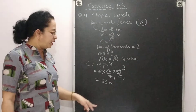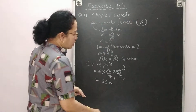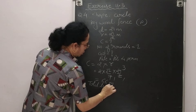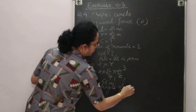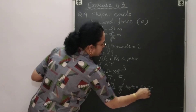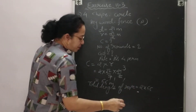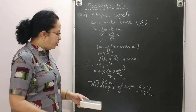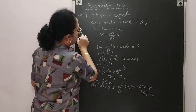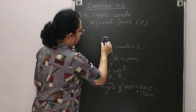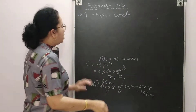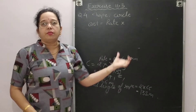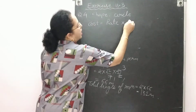Since 2 rounds are given, total length of rope = 2 × 66 = 132 meter. To find cost, multiply rate × total length. Rate is Rs. 4 per meter, so cost = 4 × 132 = 528 rupees.